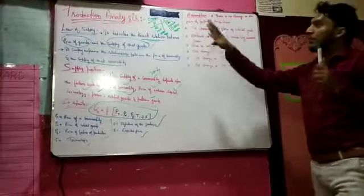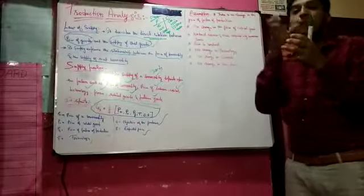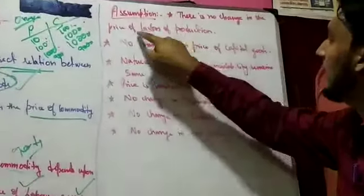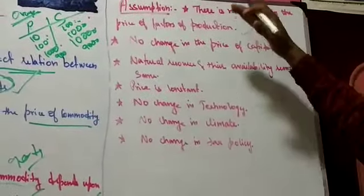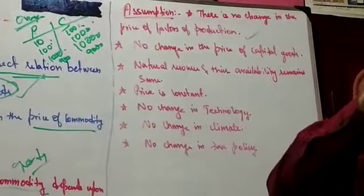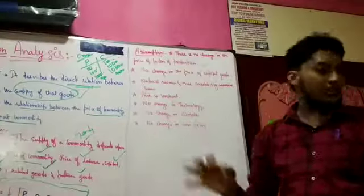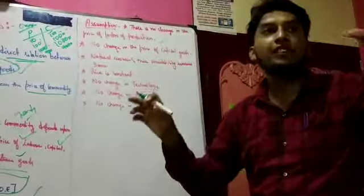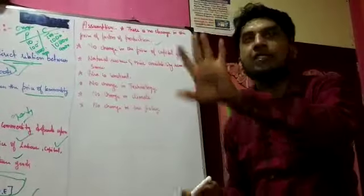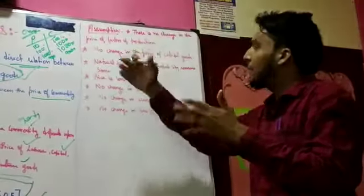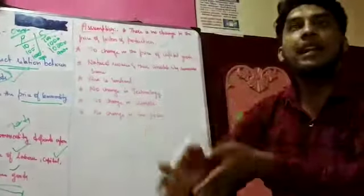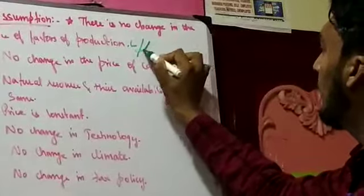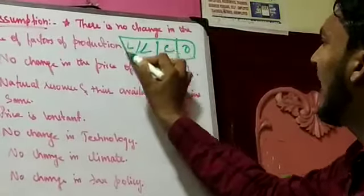Now let's see some of the assumptions, some of the criteria for the law of supply. First, there is no change in the price of factors of production. Land will be the same, labor will be the same, capital will be the same, organization will be the same — there will be no changes. For example, the location is fixed, labor of 100 specialized workers is fixed, capital of $10,000 remains constant, and the organization in the particular building remains the same.